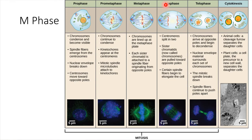The next step is anaphase. During anaphase, the duplicated chromosomes get separated. Remember, each duplicated chromosome consists of two sister chromatids. What's going to happen during anaphase is those sister chromatids get pulled apart from each other.